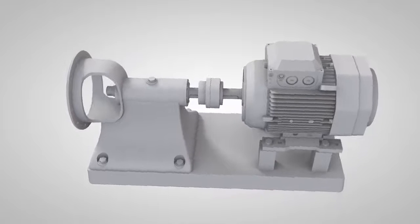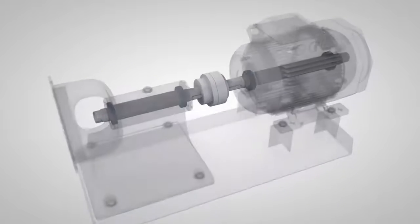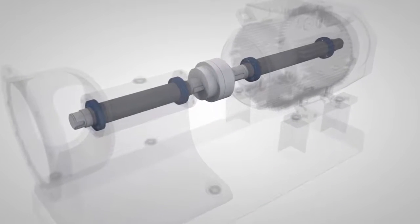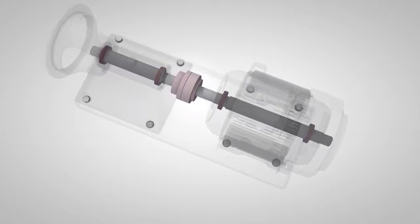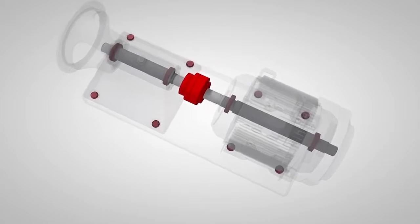Correct shaft alignment is very important for your machines, as misalignment causes vibration and additional forces that damage your machine components, such as bearings, seals, couplings and foundation bolts.